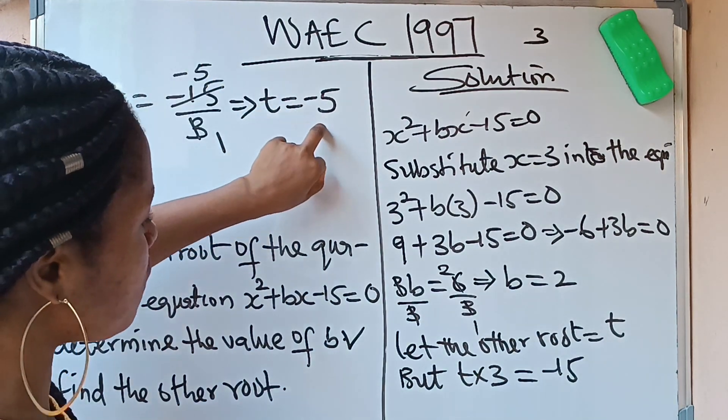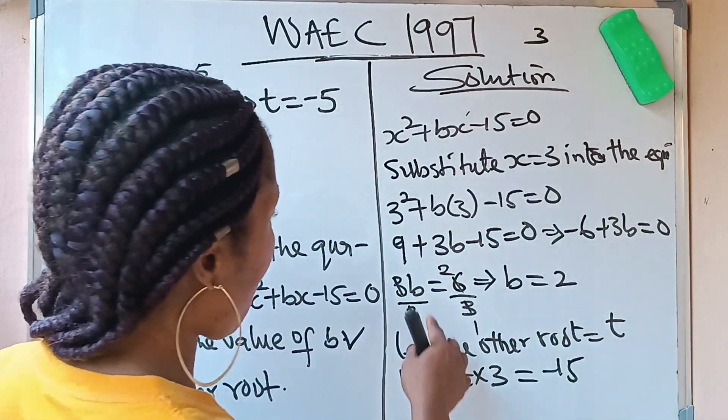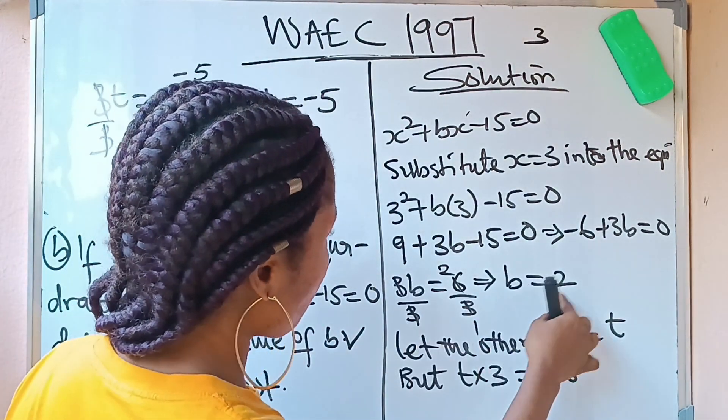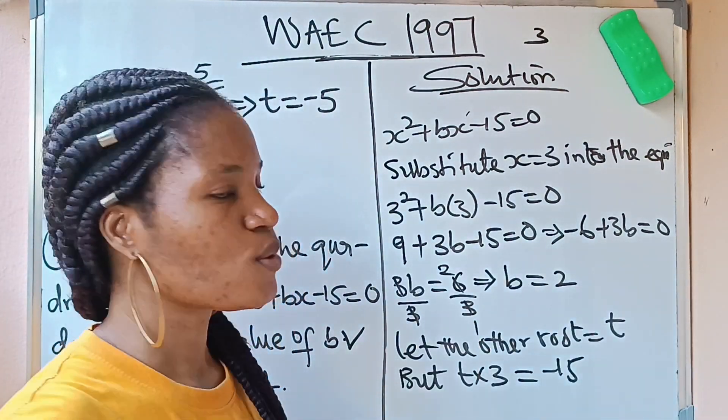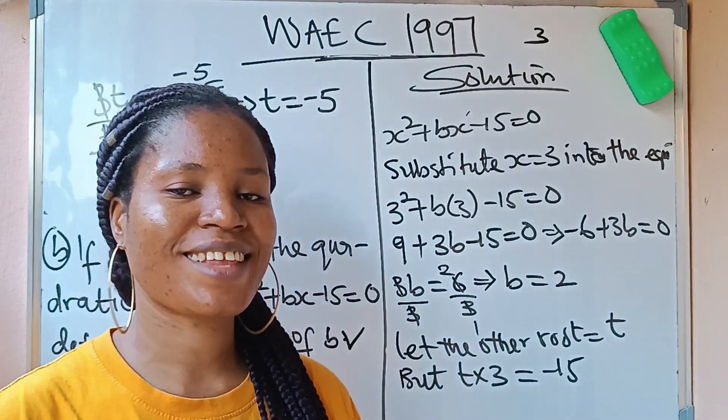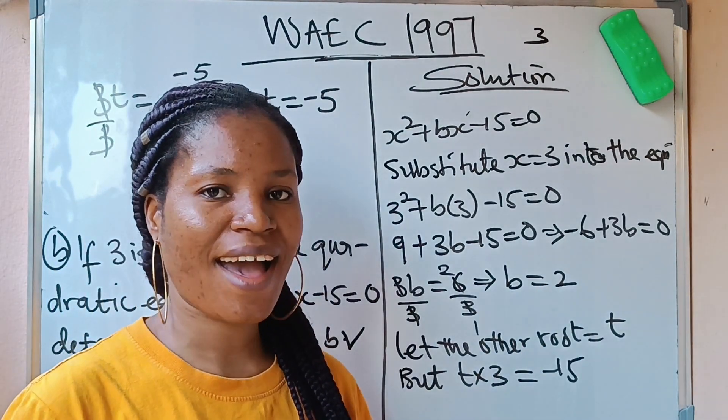So our final answers are: t equals negative 5 and b equals 2. Do have a lovely day, bye bye.